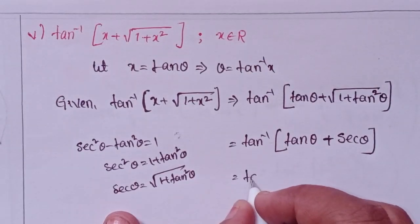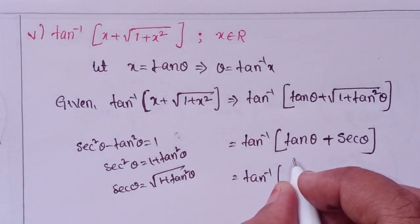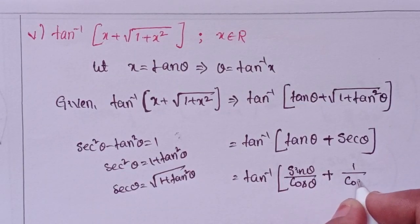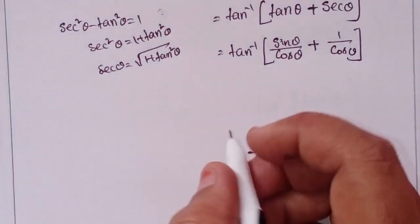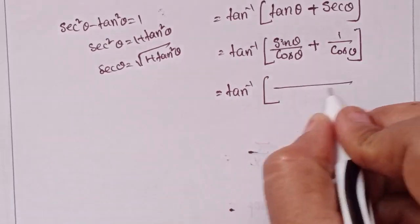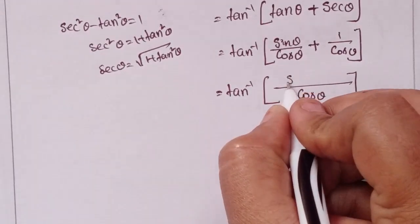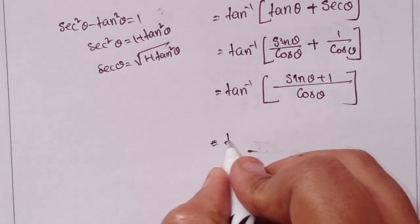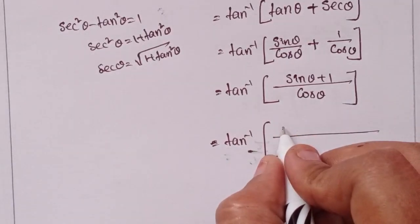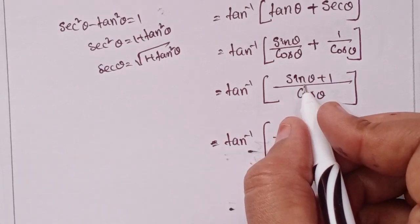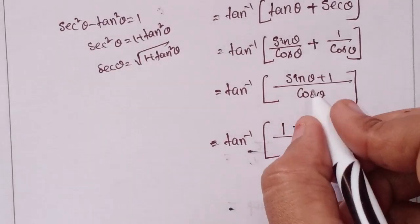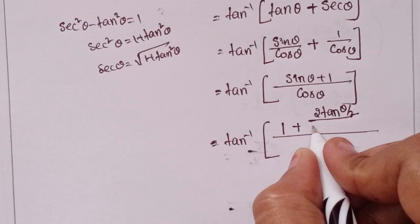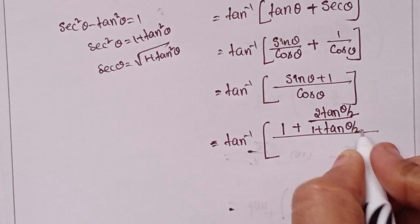Tan inverse — writing sin in terms of tan: 2 tan(θ/2) divided by 1 plus tan²(θ/2). And cos in terms of tan: 1 minus tan²(θ/2) divided by 1 plus tan²(θ/2).